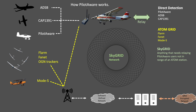SkyGrid has significantly increased the performance of the PilotAware infrastructure and further reduces the obscuration inherent in poorly sighted carry-on devices. The latest software release introduces PilotAware iGrid, which provides dual link technology to significantly increase the bandwidth available for data transfer. This allows PilotAware to increase the amount of detected aircraft available for presentation on a screen and also introduce information services to pilots in flight.